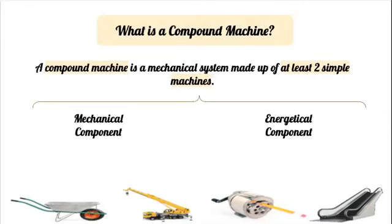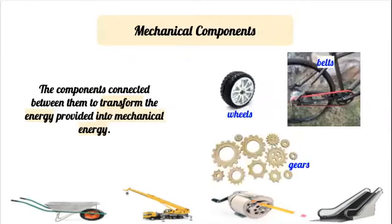Let's review each one of them separately. Mechanical components include any tool or object used to transform the energy given to the machine, which can be of any nature, into mechanical energy. So think of it as any component that transforms energy into mechanical energy. Examples of mechanical components include, but are not limited to, wheels, which can be found in wheelbarrows, cranes, bicycles, etc. Belts, such as this red one, that are included in bicycles.